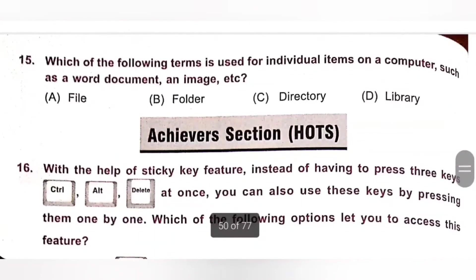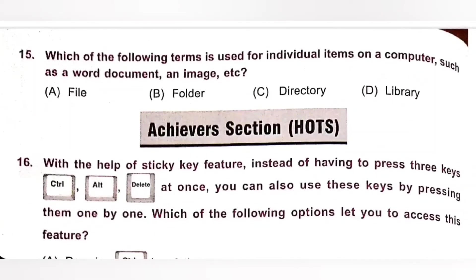Fifteenth: Which of the following terms is used for individual items on a computer? The term used for individual items on a computer is File. Option A is the correct answer. Collection of files will be stored in a folder, and collection of folders will be stored in a directory.